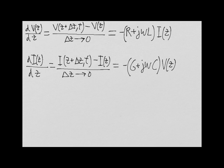If we then take the derivative of these two equations with respect to z and make a couple of substitutions, we end up with the following two differential equations describing the voltage and current on the transmission line.